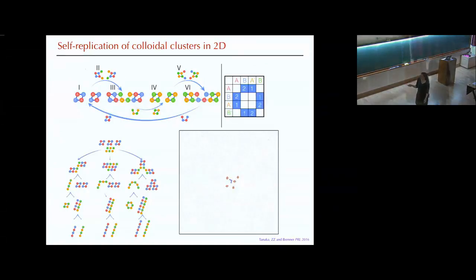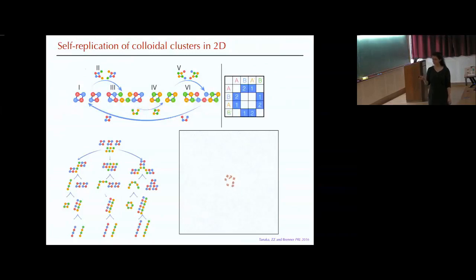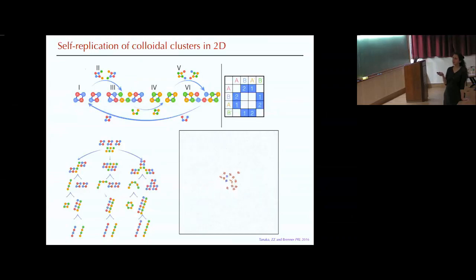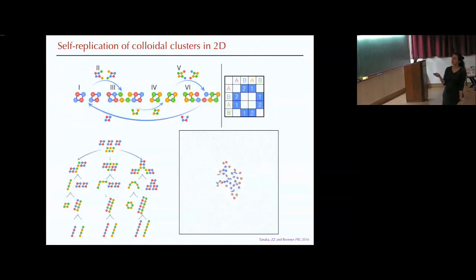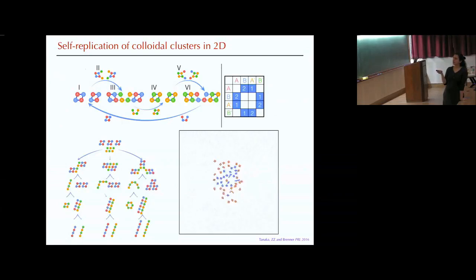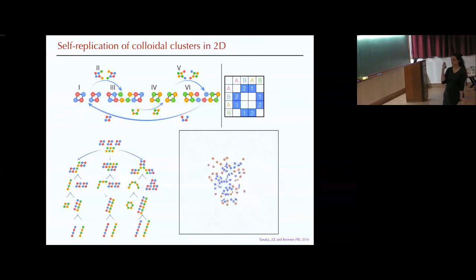We started with a few squares bathed in particles. We show just two colors: red means it's an activated parent — it has particles attached and is ready for replication — and blue means it's not an active parent. This was the starting point and we just ran the simulation. This is a much bigger simulation than what we had in the three-dimensional case.